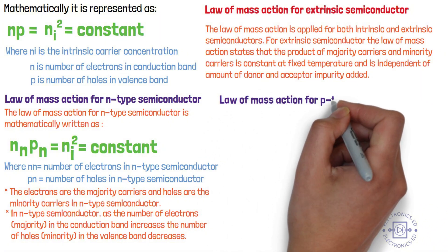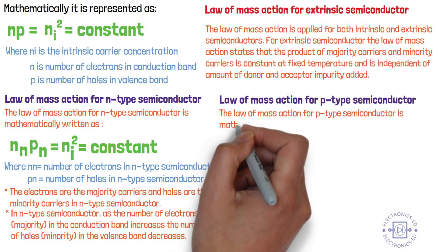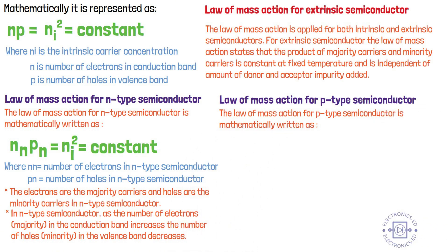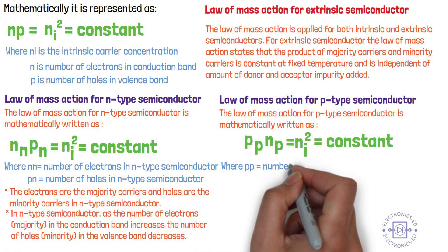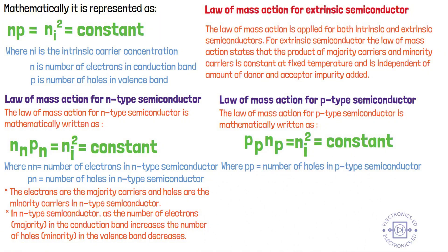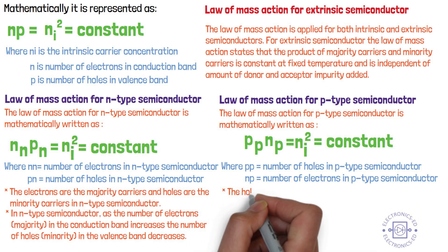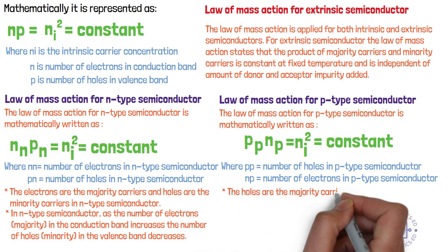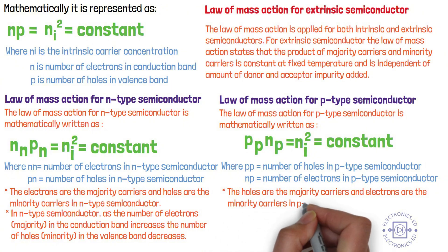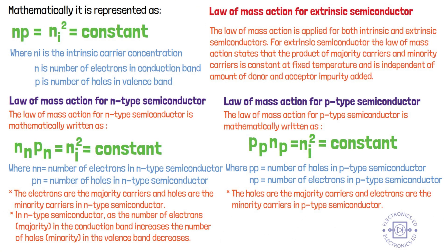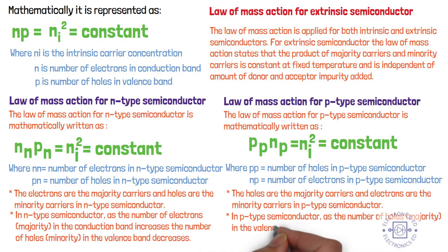Law of mass action for P-type semiconductor. The law of mass action for P-type semiconductor is mathematically written as P_P times N_P equals NI square equals constant, where P_P equals number of holes in P-type semiconductor and N_P equals number of electrons in P-type semiconductor. The holes are the majority carriers and electrons are the minority carriers in P-type semiconductor. As the number of holes in the valence band increases, the number of electrons in the conduction band decreases.